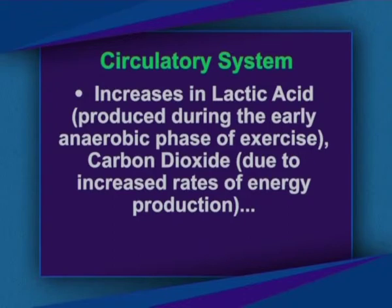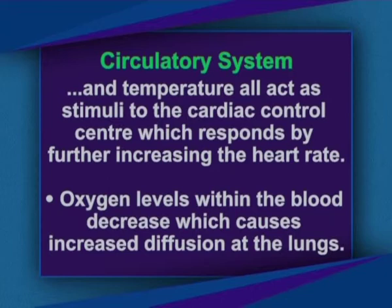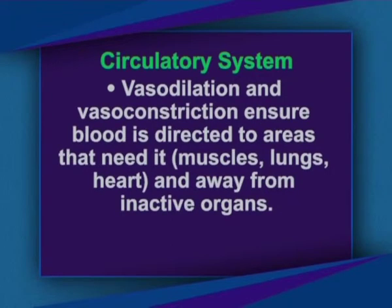Increases in lactic acid produced during the early phase of exercise, carbon dioxide due to increased rate of energy production, and temperature all act as stimuli to the cardiac control center, which responds by further increasing heart rate. Oxygen levels in the blood decrease, causing increased diffusion at the lungs, and blood pressure increases, raising flow rate and speed of oxygen and nutrient delivery to working muscles. Vasodilation and vasoconstriction ensure blood is directed to areas that need it and away from inactive organs.